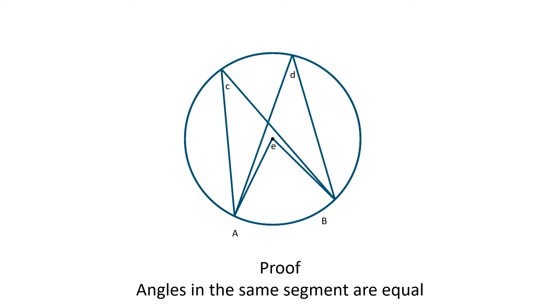So E equals 2C and E equals 2D. Therefore 2C equals 2D, so C equals D, proving that angles in the same segment are equal.